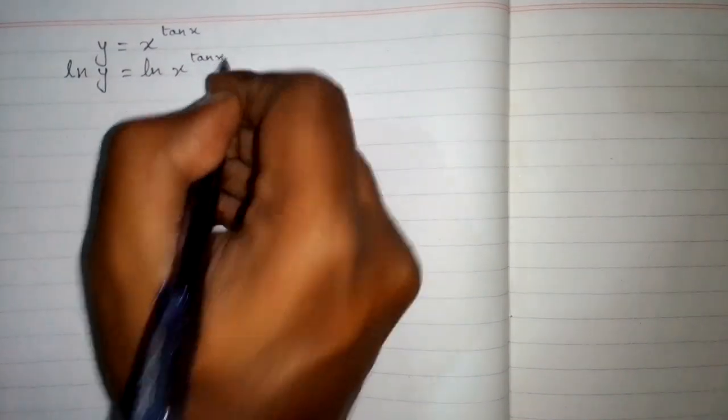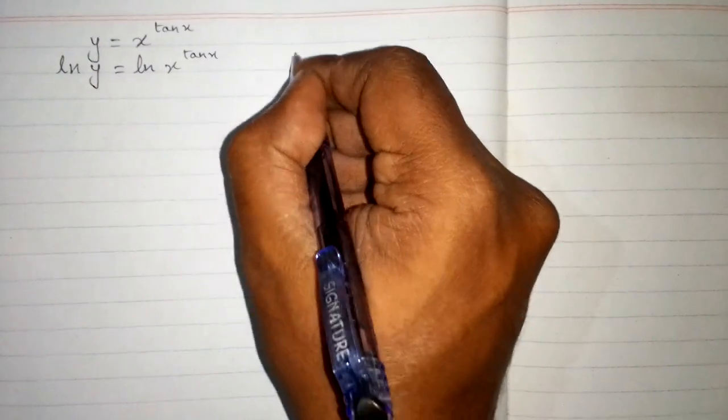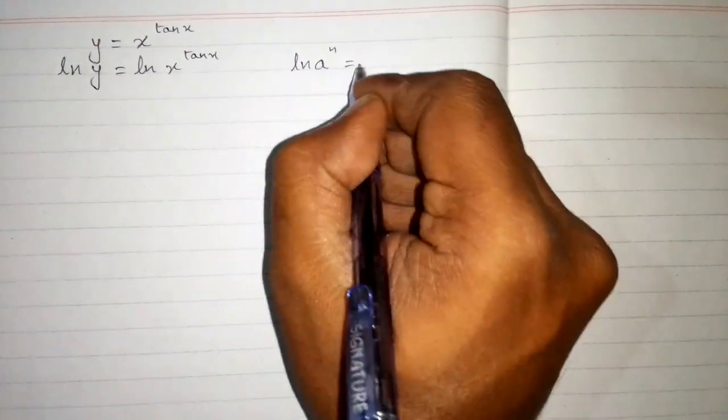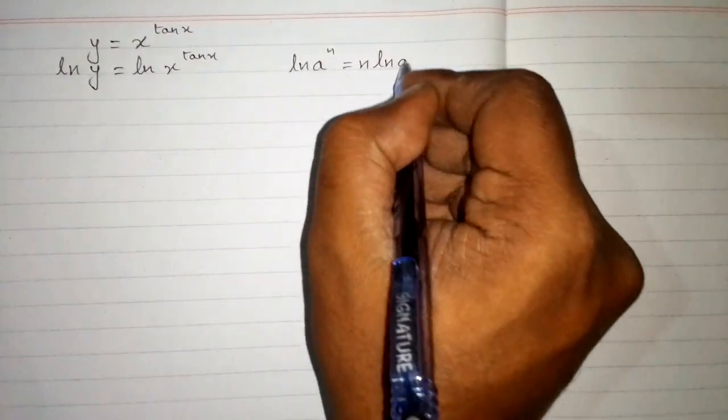We apply ln on both sides. Now we know that ln a to the power n is equal to n times ln of a.